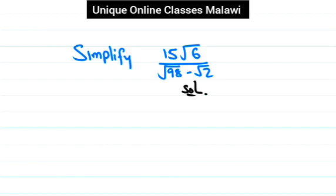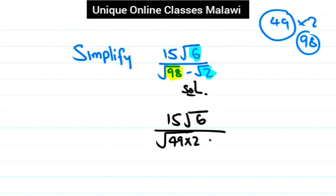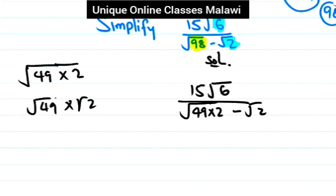Check here — the number 98 is not a perfect square number. But 49 is a perfect square number, and 49 times 2 gives 98. So we are going to express 98 in terms of 49 times 2. So we can write: 15 times the square root of 16, divided by the square root of 49 times 2, minus the square root of 2.